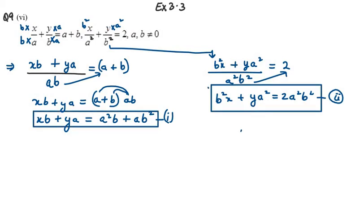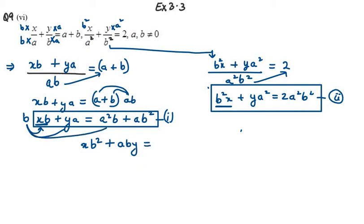I will use the elimination method. In equation 1 we have XB, and in equation 2 we have B²X, so we multiply equation 1 by B to make the first term XB². The first term becomes XB² and the second term becomes plus ABY, and the right-hand side becomes A²B² plus AB³. The second equation remains: XB² plus YA² equals 2A²B².